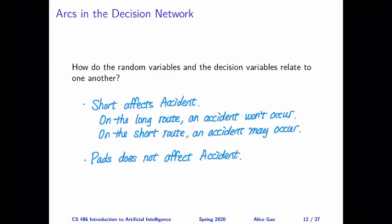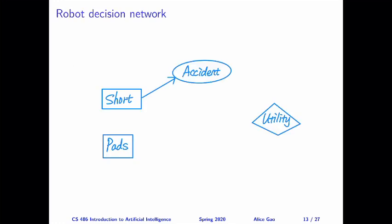Given our analysis here, let's connect the nodes based on this. I created an edge from short to accident because short affects accident. There's no edge from pads to accident because wearing pads or not does not influence the probability that an accident occurs.